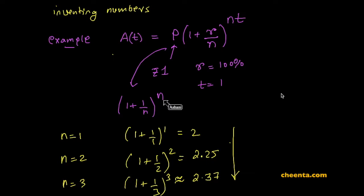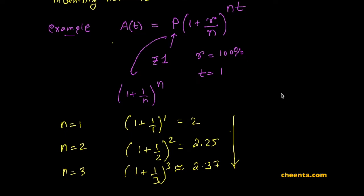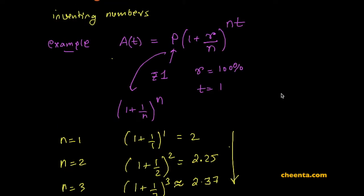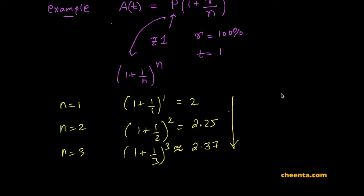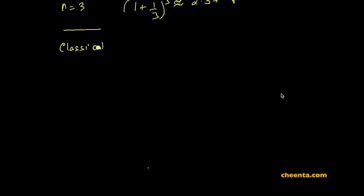This was an experimental observation. By definition, it's a monotonically increasing sequence — a sequence that continuously increases in value as you increase the input value. But this was only experimental. We want to prove this rigorously, and this will lead us to a very beautiful application of a theorem from classical inequalities.